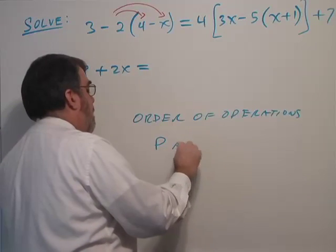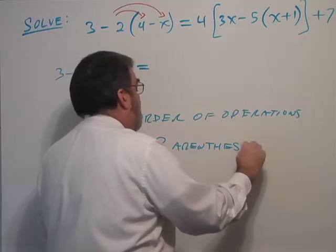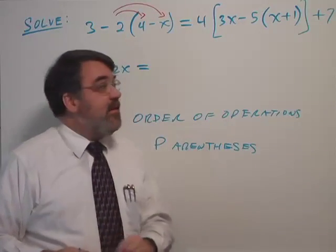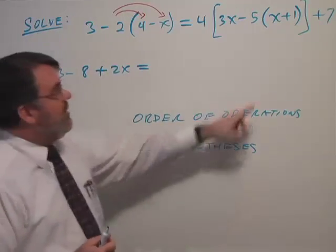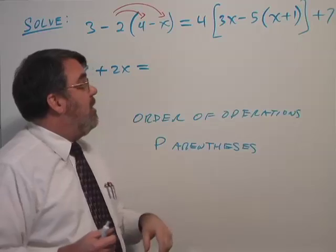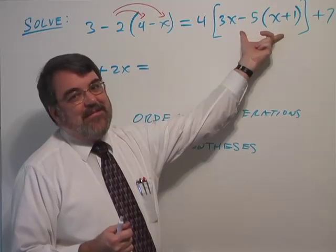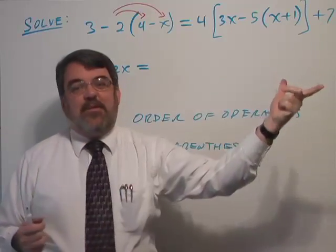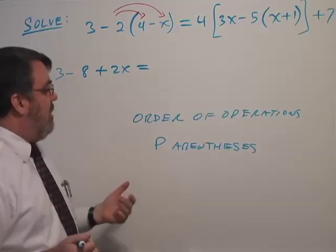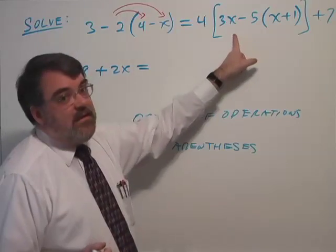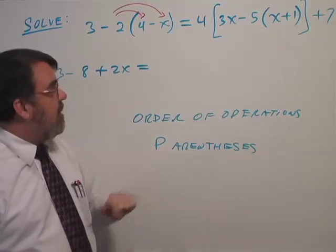Here I can't simplify 4 minus x or x plus 1, but we can simplify inside this bracket. Remember, the bracket works like a parentheses - it's no different mathematically. So we're going to simplify this bracket first on the right side of the equation. Then the next thing in order of operations are exponents.